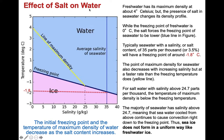Looking at the effect of salt on water: on this diagram, the vertical axis shows temperatures in degrees Celsius from minus 3 to plus 5, and the horizontal axis shows salinity in grams per kilogram. Fresh water has its maximum density at about 4 degrees Celsius. But the presence of salt in seawater changes this density profile — while the freezing point of fresh water is 0 degrees Celsius, salt forces the freezing point of seawater to be much lower.